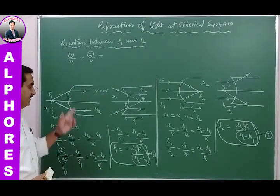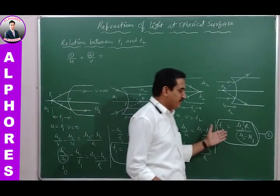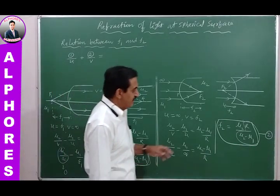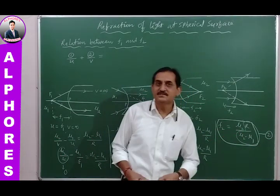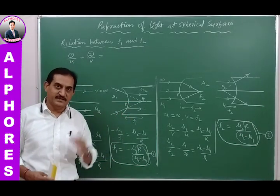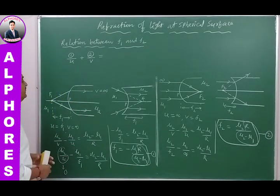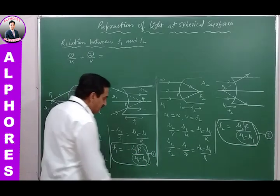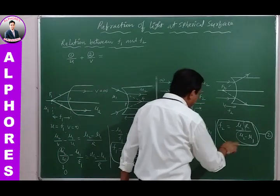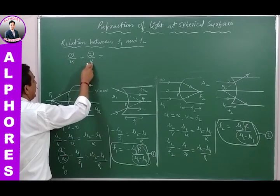Let us find the relation between F₁ and F₂. Using the formula for F₁ and F₂, divide equation 1 by U and equation 2 by V, then add them. This gives F₁/U + F₂/V.